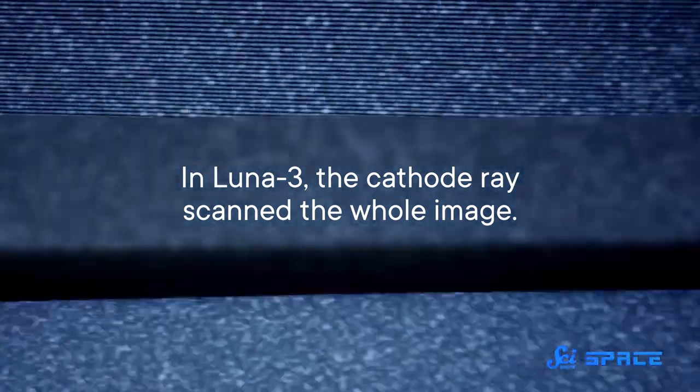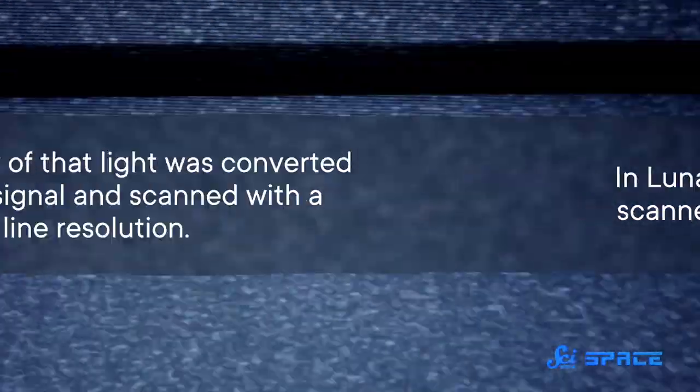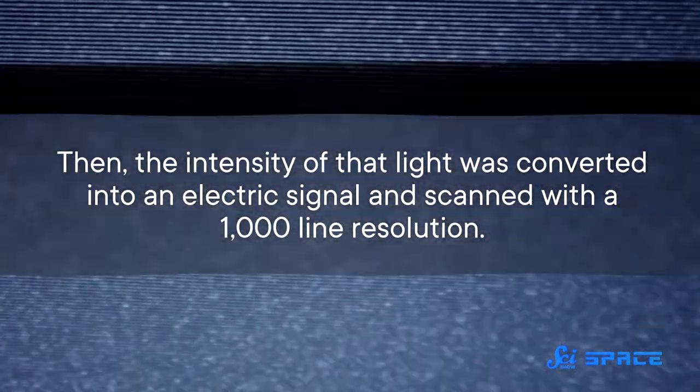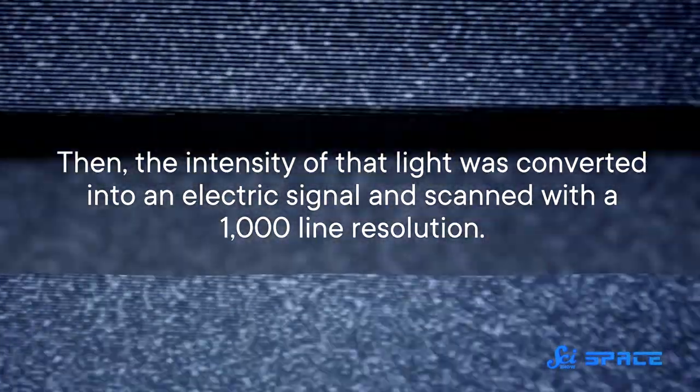In Luna 3, the cathode ray scanned the whole image. Then, the intensity of that light was converted into an electric signal and scanned with a thousand-line resolution. This is similar to how televisions used to work, those same old ones with the antenna.